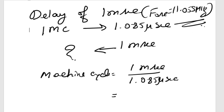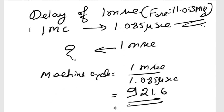Computing 1 millisecond divided by 1.085 microseconds gives 921.6. So approximately 922 machine cycles are needed to execute a one millisecond delay.